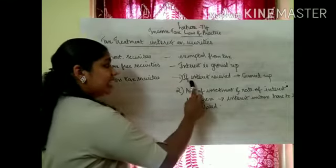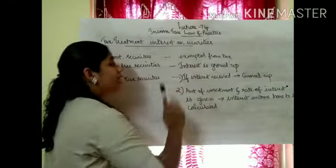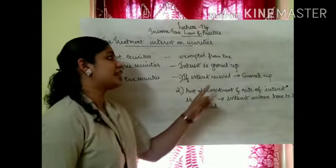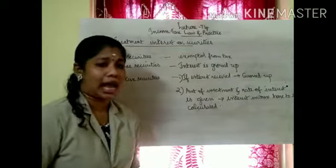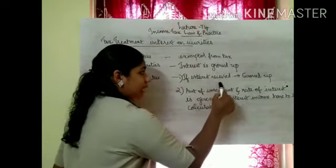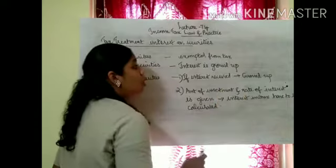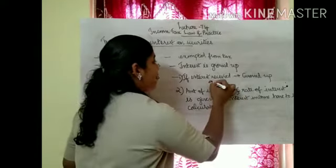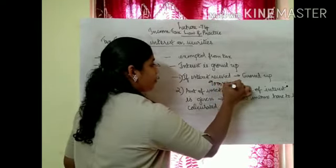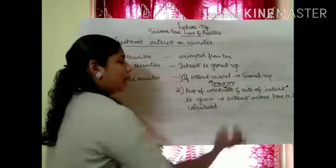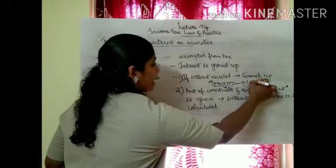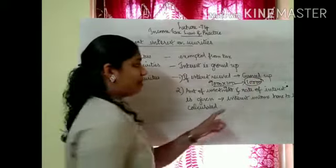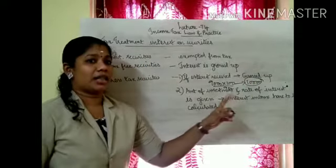For less tax securities, that is non-government securities, interest received is calculated as: 9,000 into 100 by 100 minus 10, that is 100 by 90, which equals 10,000 rupees from other sources.